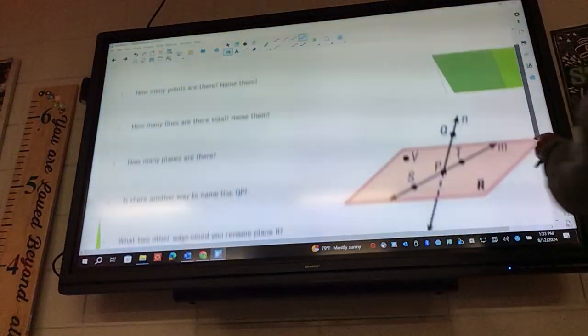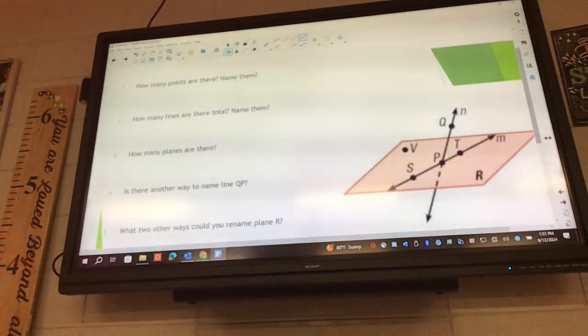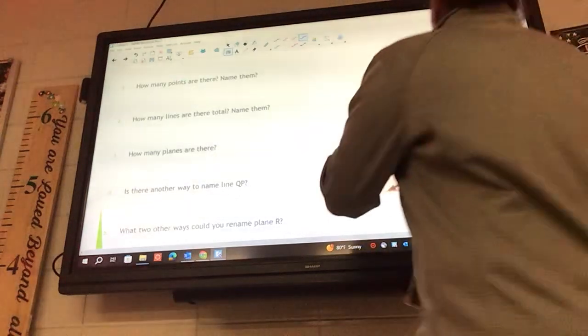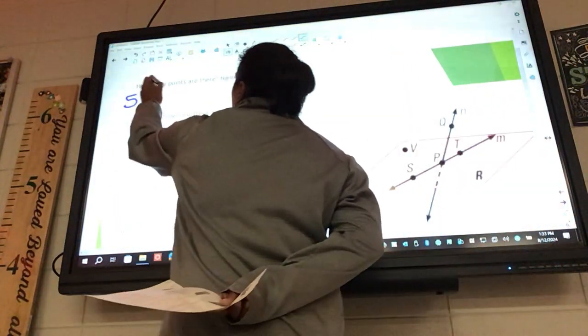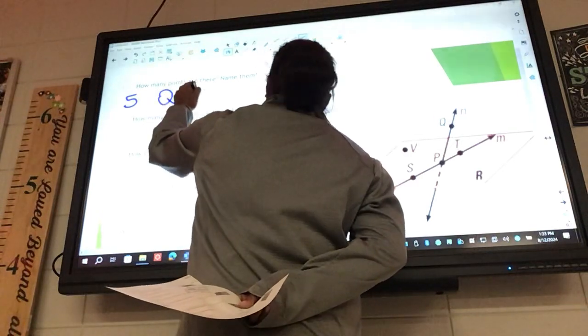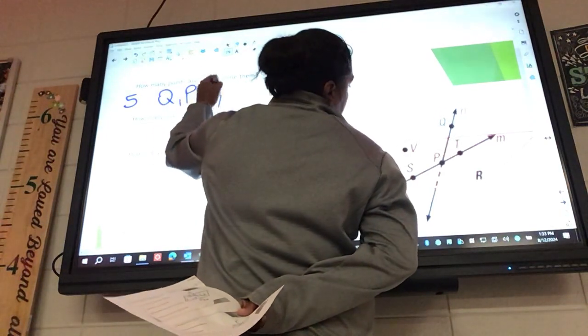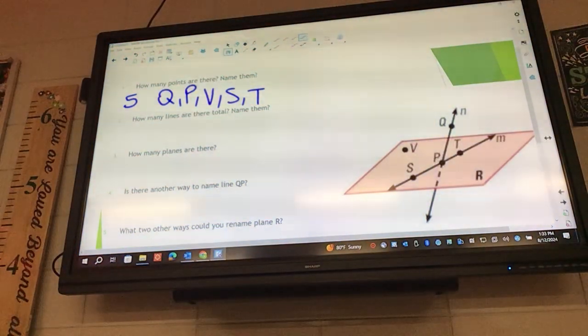We're looking at the bottom slide again on the front page for you guys. How many points are there? This one should go pretty quick now that we know. How many are there? Five. Yep, name them. Q, P, V, S, T. Everybody agree?